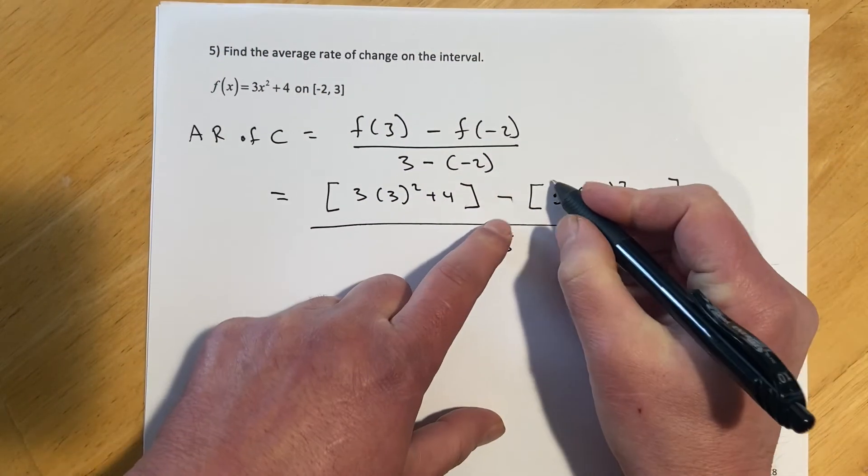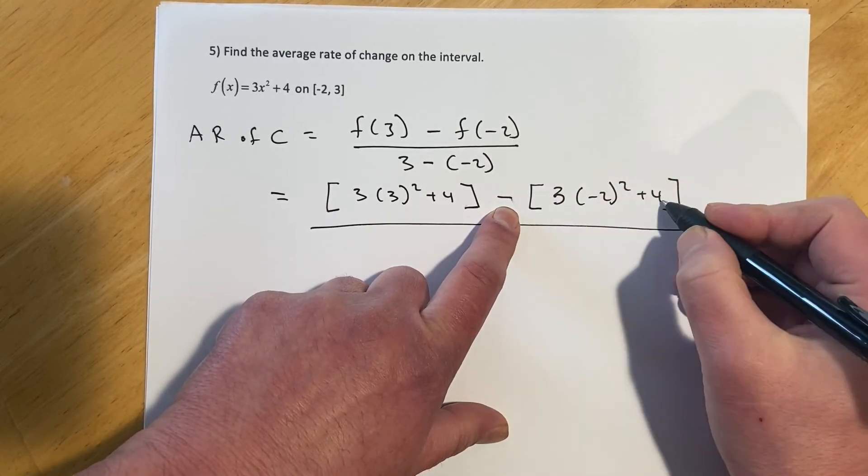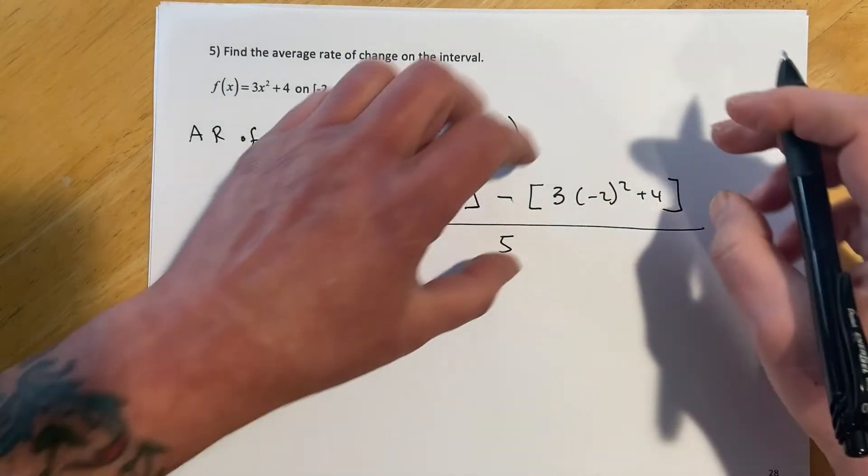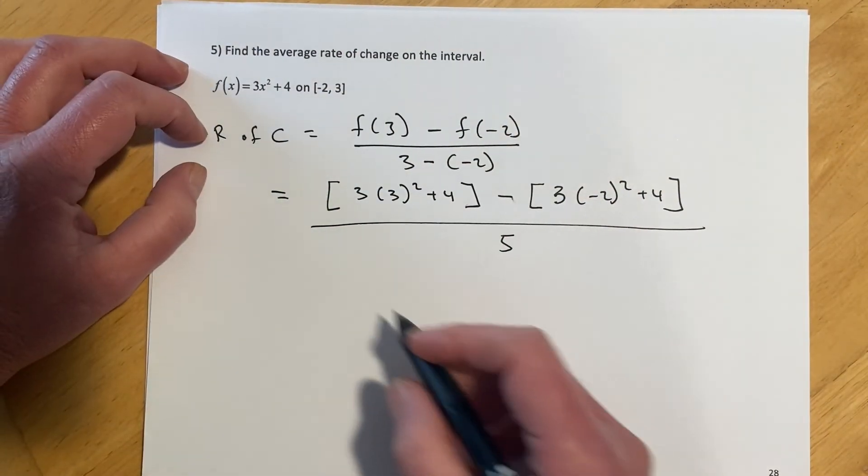f(negative 2), that parentheses is really important. If you don't have it, then the 4 ends up with the wrong sign, so you need to think of that second one as you're making a number minus a number, and that will keep your sign squared away.